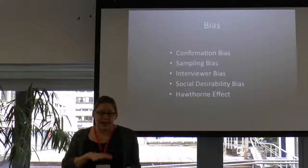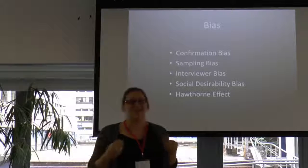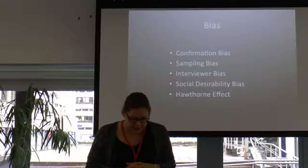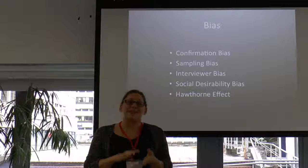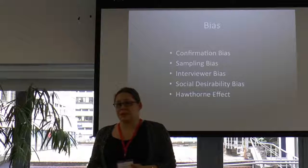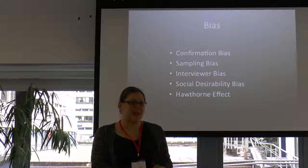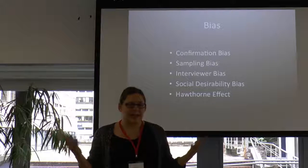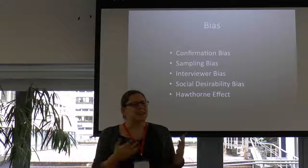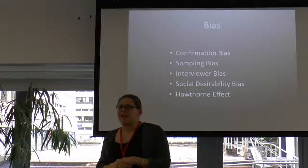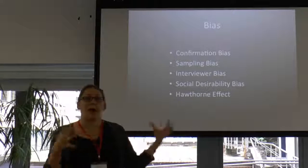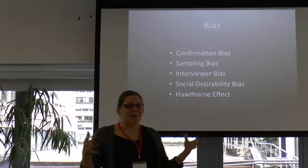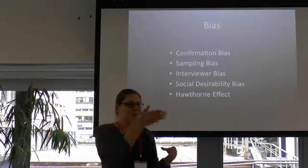Sampling bias is when the sample you're drawing from is not representative of the larger population you're trying to study. This is almost always true in social science research — we almost never get the full population. The one counter-case would be if you required everyone in a workshop to fill out the form, giving you the total population, but you still wouldn't have people outside.